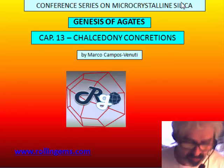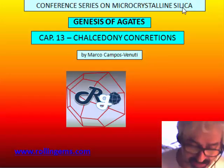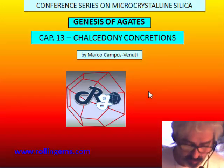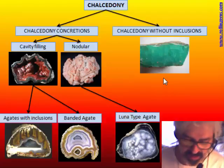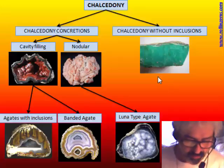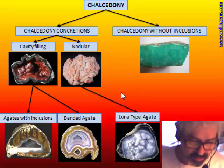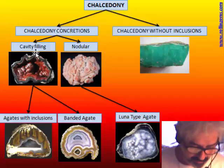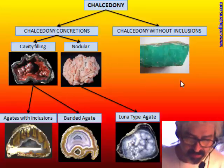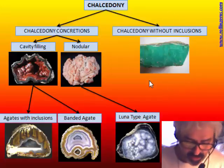We start now a new group of videos about the genesis of Agate. At the beginning we will talk about general chalcedony and then dip into the Agate stones. Chalcedony can be divided into a few groups: some are real concretions of chalcedony that can be nodular or filling a cavity, and some others are more in veins, usually chalcedony with nice colors and no internal structure.